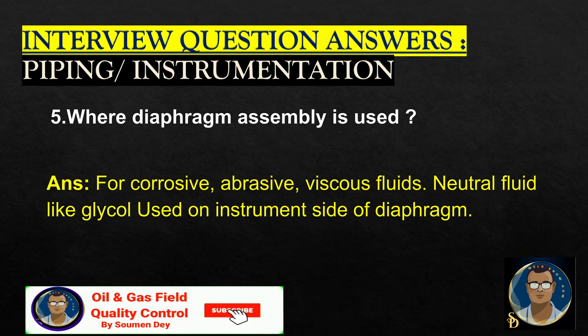Where is a diaphragm assembly used? For corrosive, abrasive, viscous fluid — neutral fluid like glycol is used on the instrument side of the diaphragm.